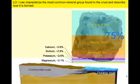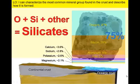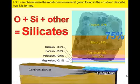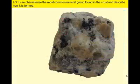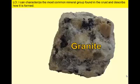In combination with a handful of other elements, oxygen and silicon combine to form the most common mineral group: the silicates. Silicate minerals contain oxygen and silicon, often with one or more of the other six elements we just mentioned.